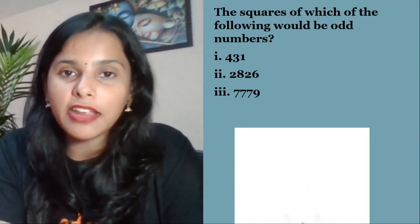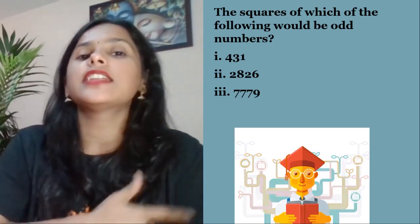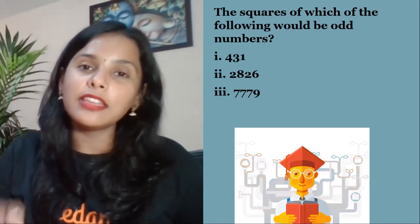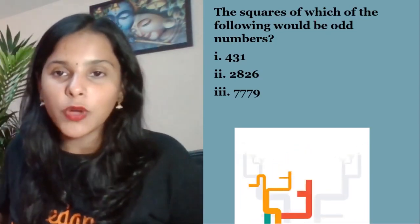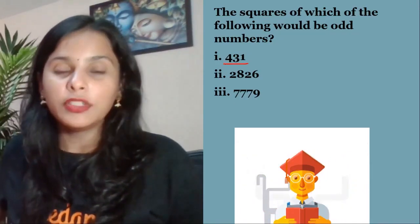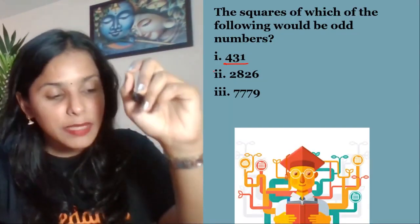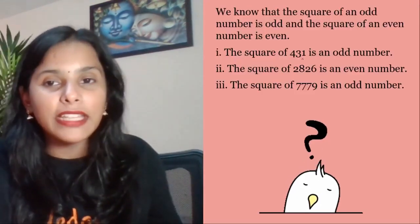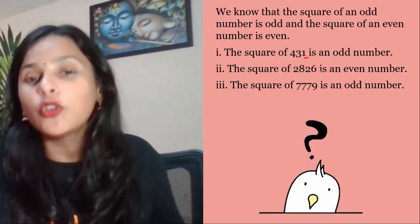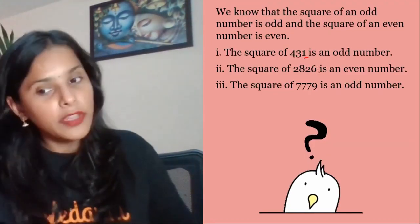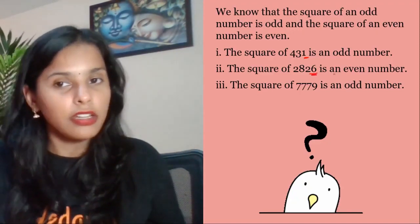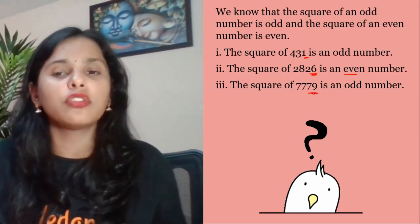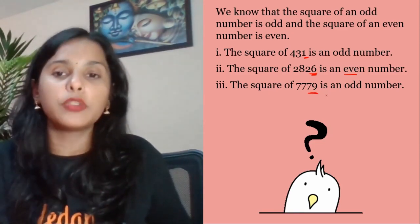This is our one-shot revision series covering 1-marker, 2-marker, and 3-marker questions for squares and square roots. The squares of which of the following would be odd numbers? 131 is an odd number, so its square is also odd. A number ending with an even digit would give an even square. A number ending with 9 is odd, so its square is also odd.